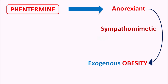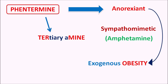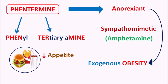Structurally, Phentermine is related to amphetamine, which is a CNS stimulant as well as a sympathomimetic. Amphetamine is classified as an indirectly acting sympathomimetic, so Phentermine also indirectly increases sympathetic activity. The name of the drug gives structural information: the suffix '-termine' indicates a tertiary amine group, and the prefix 'Phen-' indicates a phenyl group. So Phentermine is a phenyl-containing tertiary amine derivative structurally related to amphetamine, and it can reduce appetite — hence it is classified as an anorexiant.